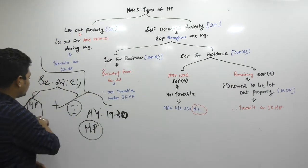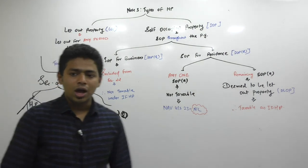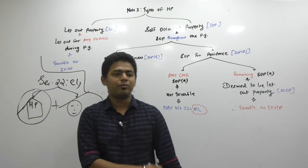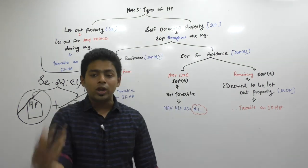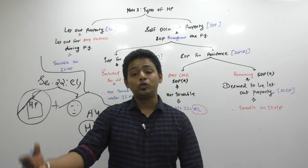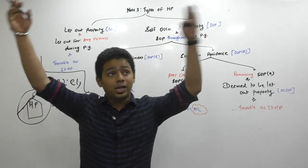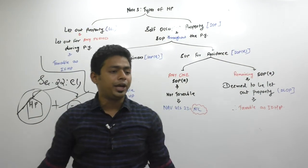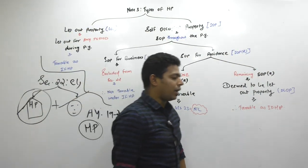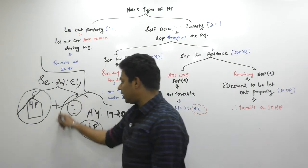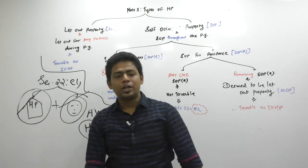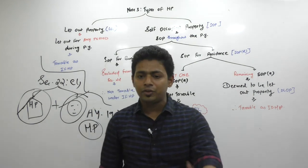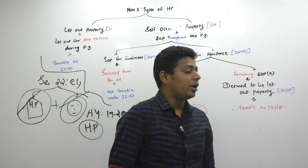There has to be house property and the assessee should be the owner of house property. What is the definition of house property? House property does not mean only a building — house property means building and land appurtenant thereto. And what is the meaning of owner? Owner doesn't mean only the legal owner. Owner also includes the beneficial owner and deemed owner.